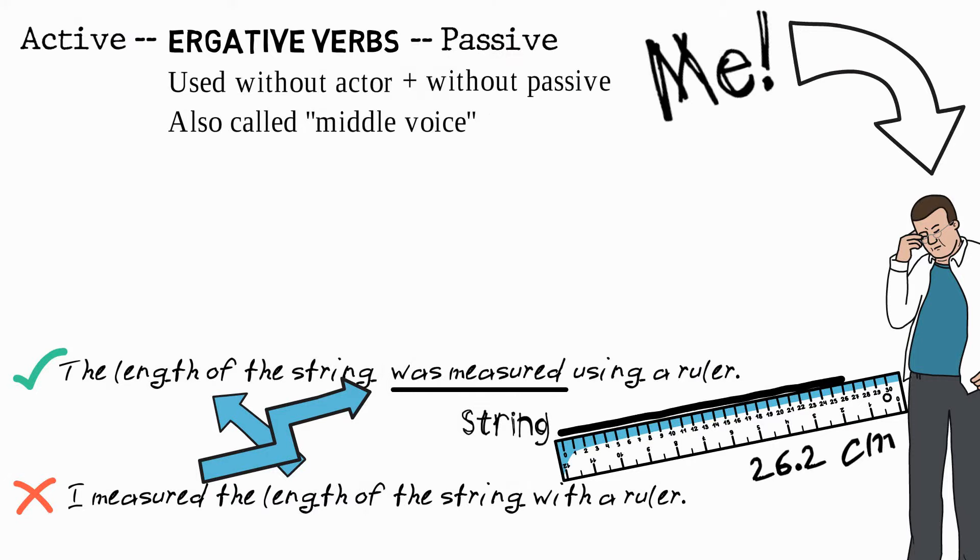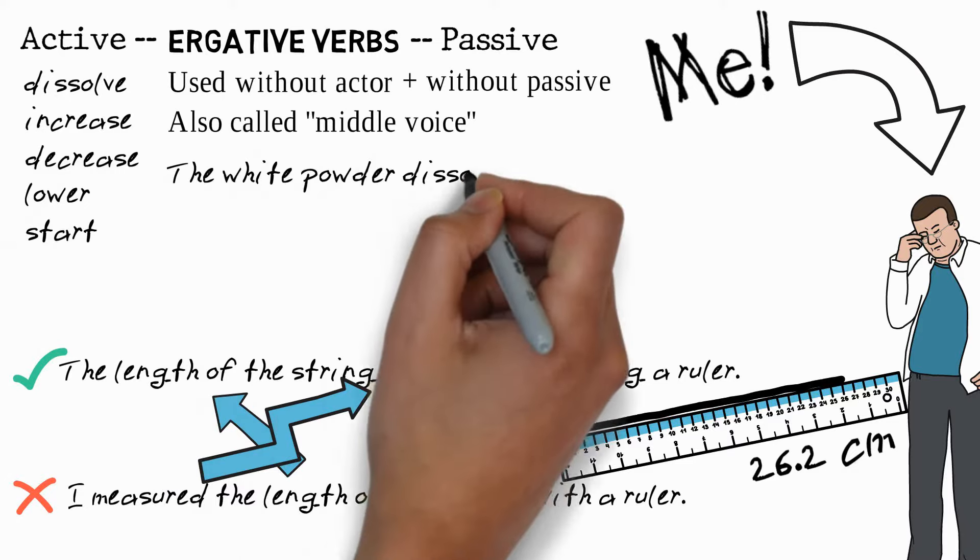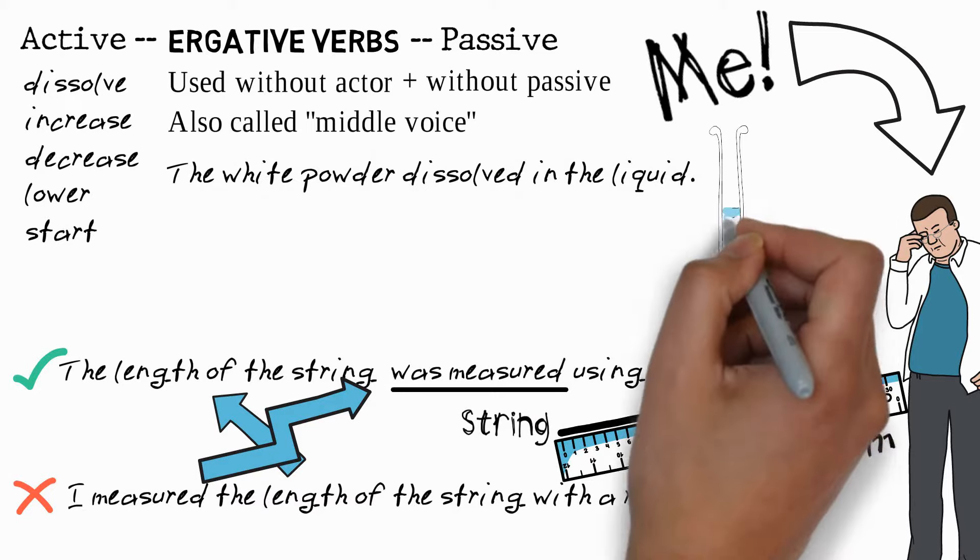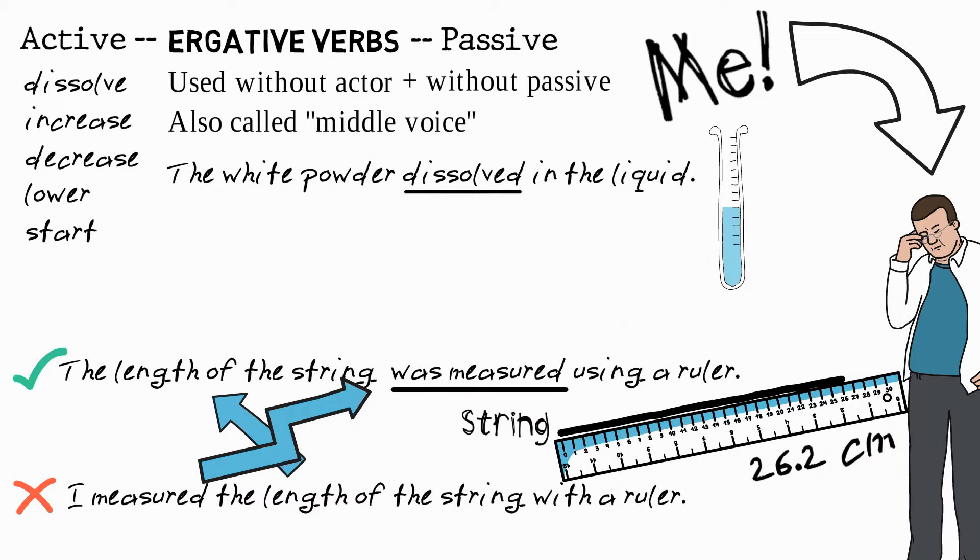Examples of ergative verbs which can be used quite commonly in academic writing are dissolve, increase, decrease, lower, and start. For example, the white powder dissolved in the liquid. So even though the white powder is not doing the dissolving, we don't need to use passive, because dissolve is an ergative verb.